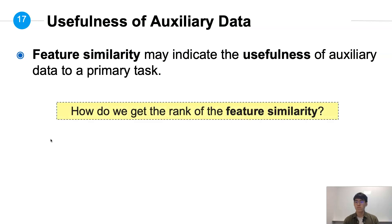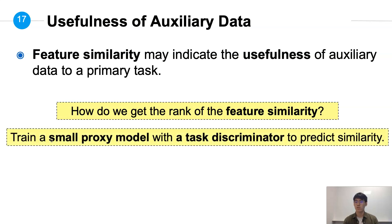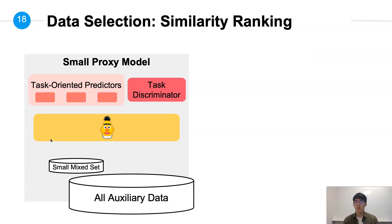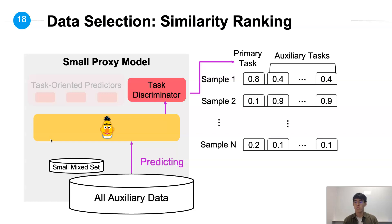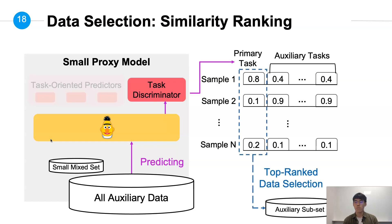So the next question is: how do we get the ranking of feature similarity? We decide to train a small proxy model with a task-discriminating objective, and use the task-discriminating score as the similarity score. First, we multitask train a proxy model with the original tasks and an additional task-discriminating objective, using a small mixed set of all tasks. After training, we use the task discriminator to predict the similarity score of each auxiliary data to the primary task, and further select the top-ranked data. Higher similarity score means the auxiliary data is more likely to benefit the primary task.